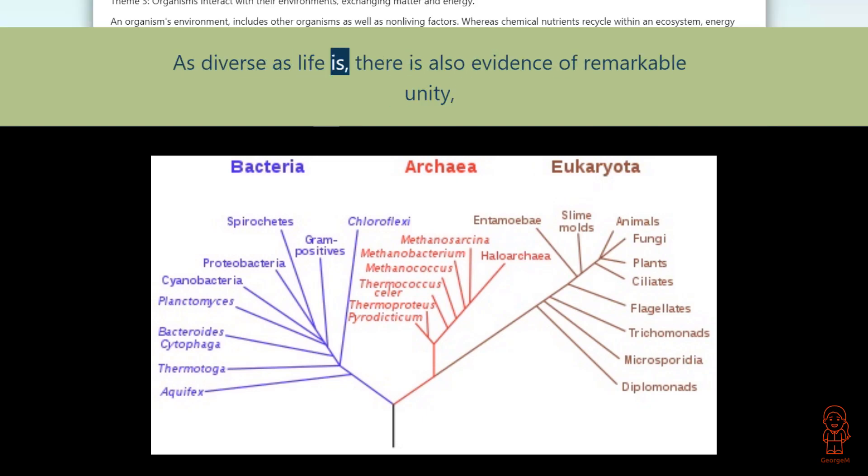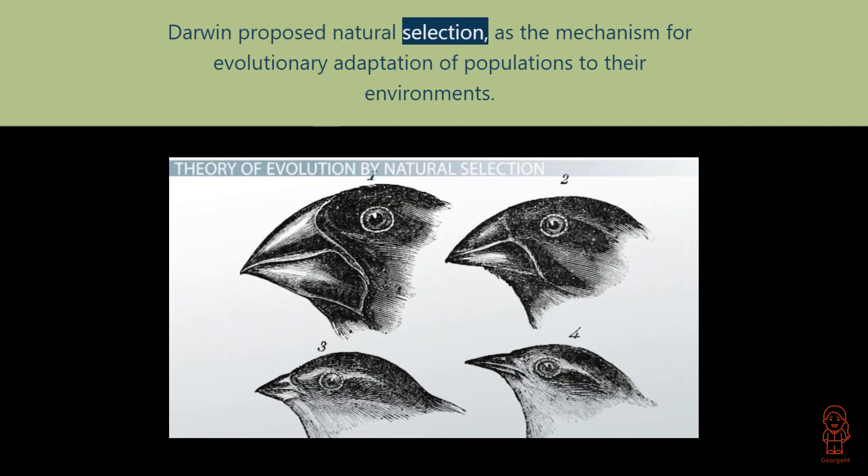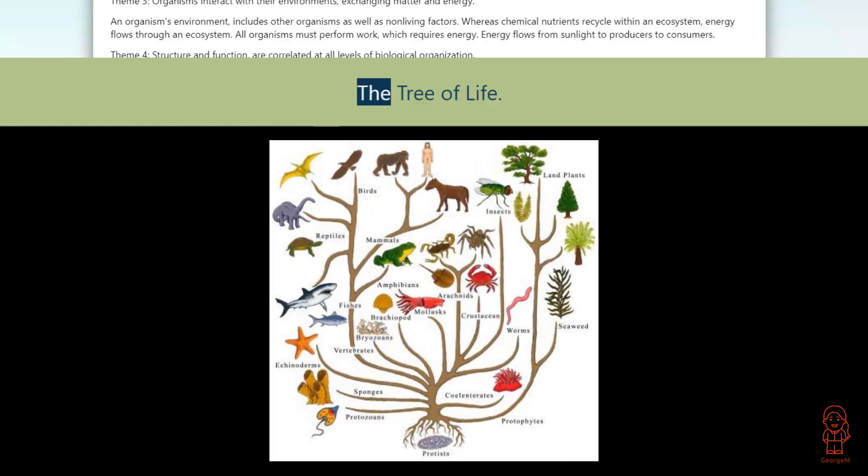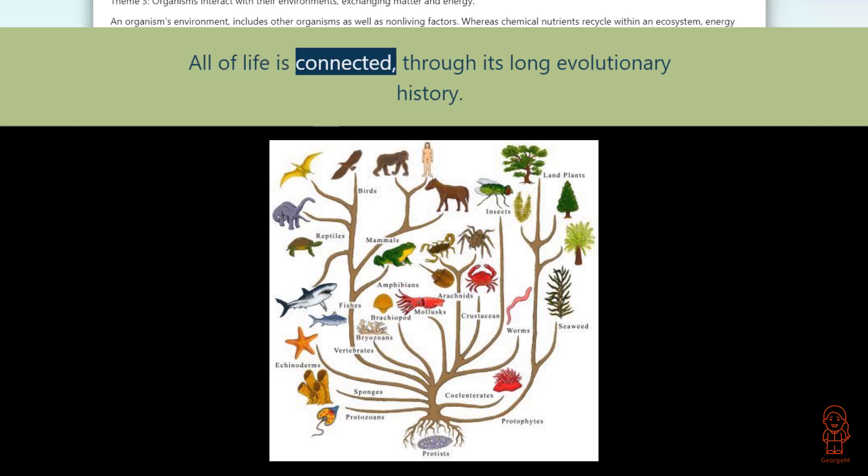As diverse as life is, there is also evidence of remarkable unity, which is revealed in the similarities between different kinds of organisms. Charles Darwin and the theory of natural selection: Darwin proposed natural selection as the mechanism for evolutionary adaptation of populations to their environments. The tree of life: each species is one twig of a branching tree of life extending back in time through ancestral species more and more remote. All of life is connected through its long evolutionary history.